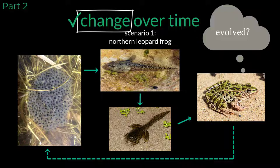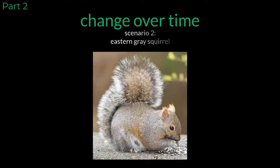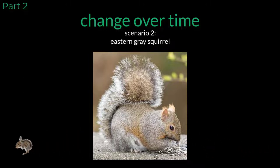Keep your answer to that question in the back of your head as we go through another example. Let's take a different approach to the idea of change. The eastern gray squirrel is a common squirrel also found throughout Illinois and much of the eastern United States. If you live in those areas you can often see them leaping through trees as they search for food, evade predators, and look for mates.